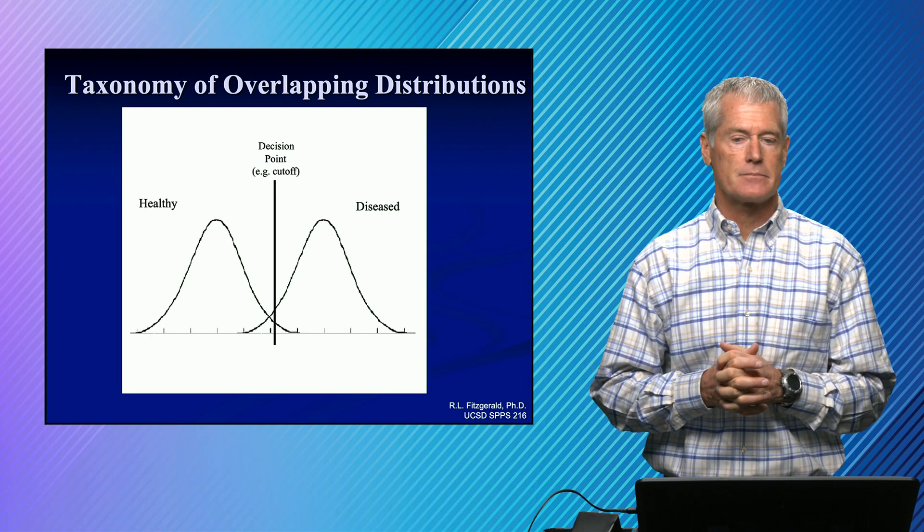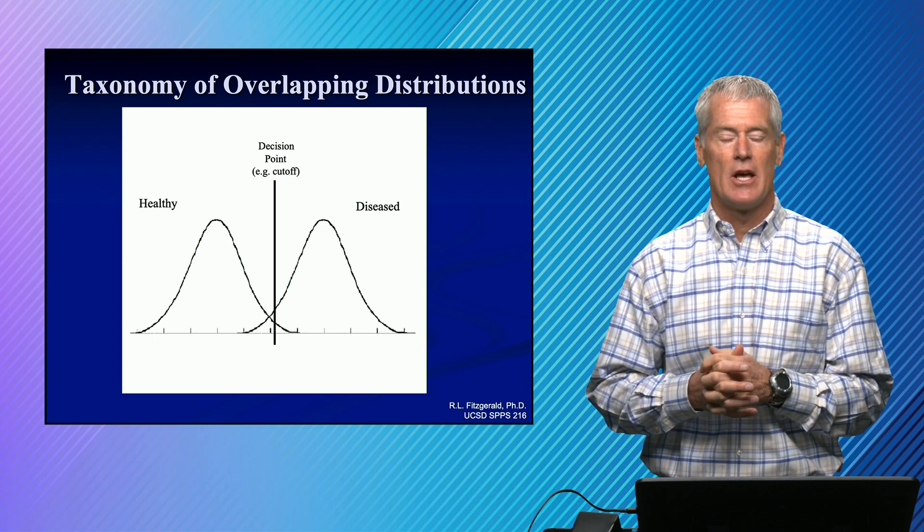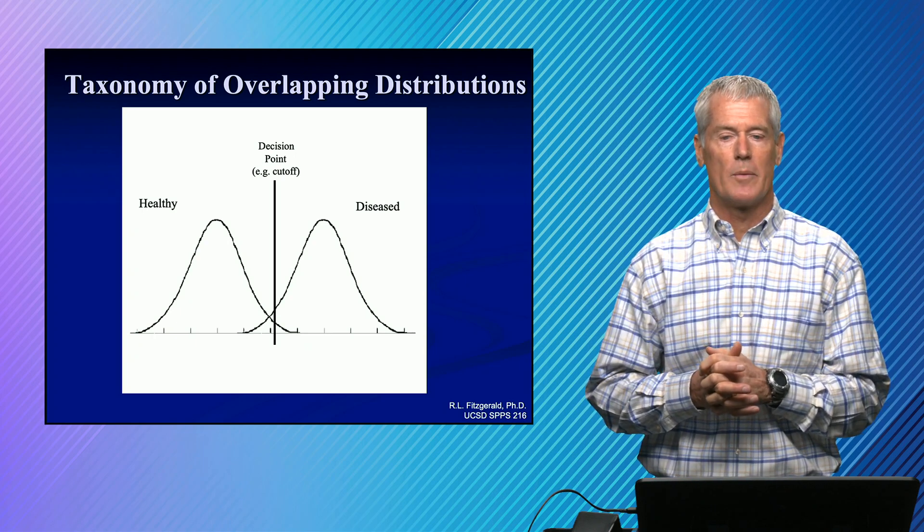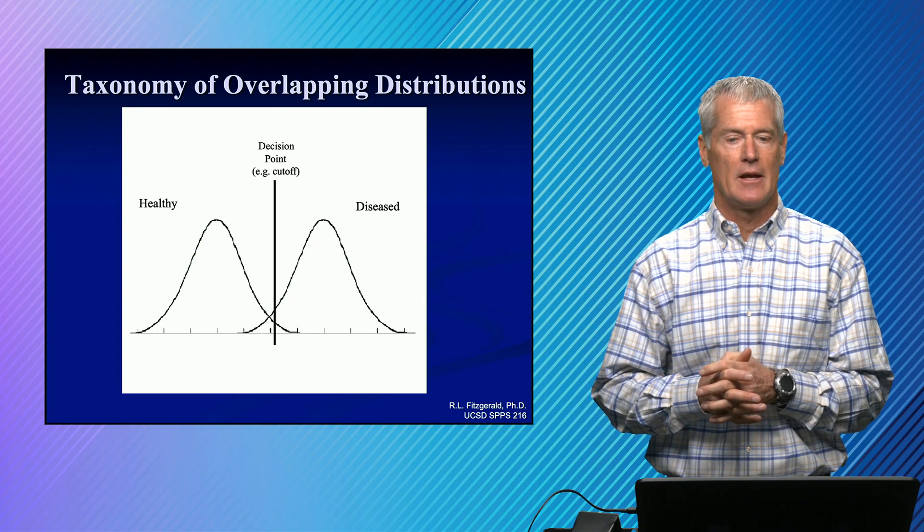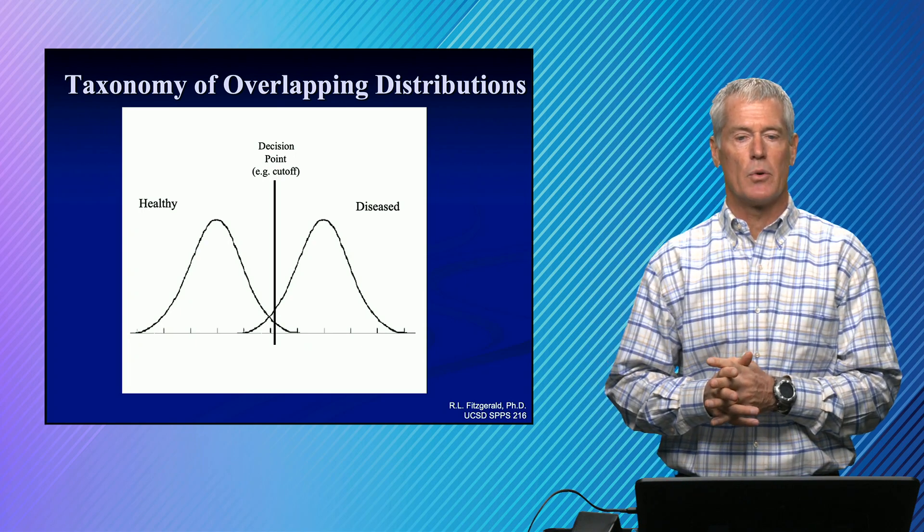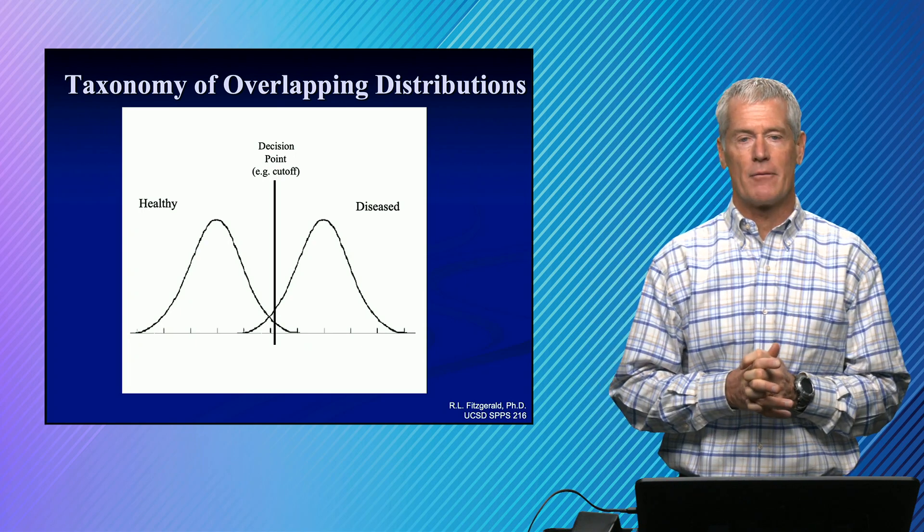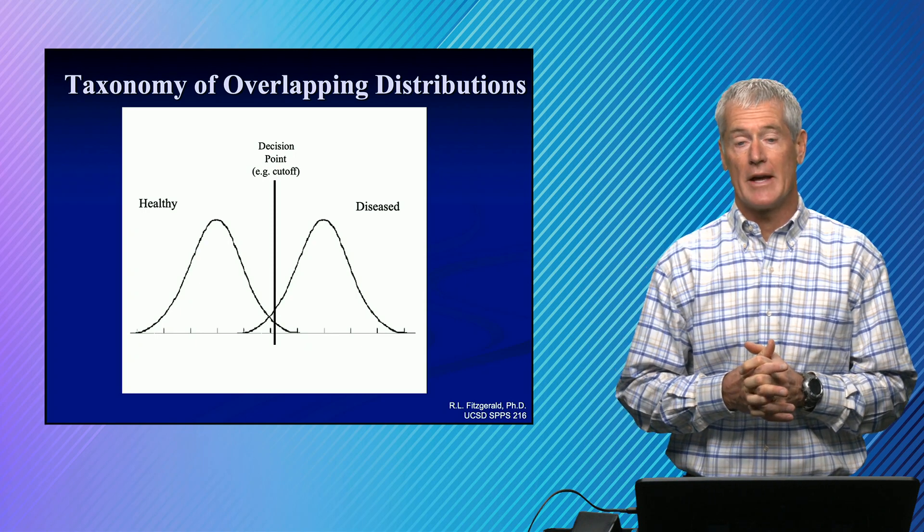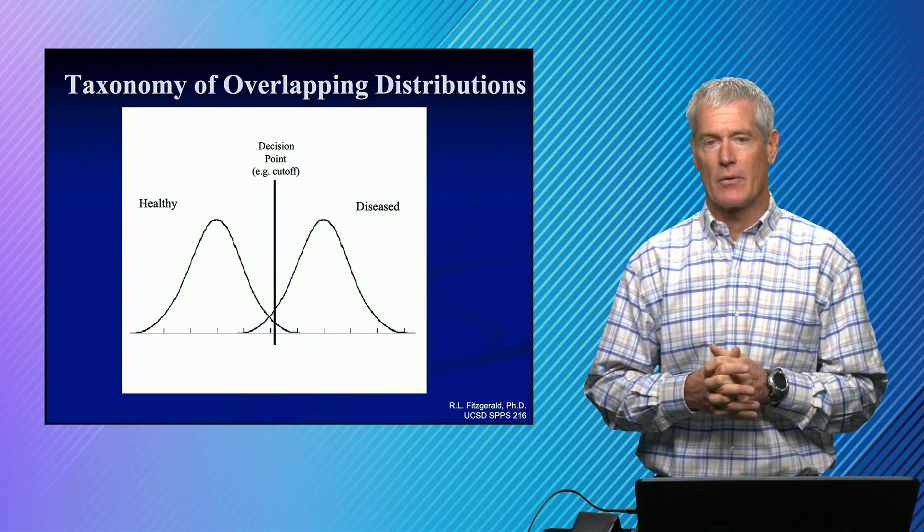For example, if you have a highly contagious disease, you want to be very sensitive and you want to pick up all of the disease state. And so you want to shift that decision point to the left. So you pick up everyone that has disease. What that does is that it's going to increase your false positive rate.